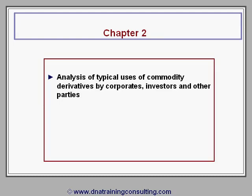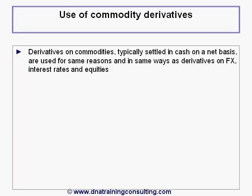Chapter 2 analyzes a number of typical uses of commodity derivatives by corporates, investors and other parties. Derivatives on commodities, typically settled in cash on a net basis, are used for many of the same reasons and in many of the same ways as derivatives on FX, interest rates and equities.